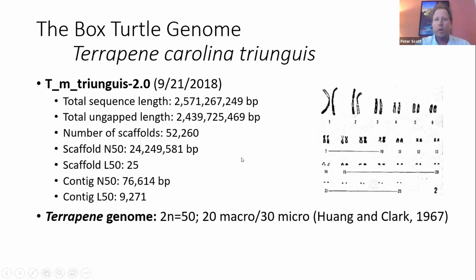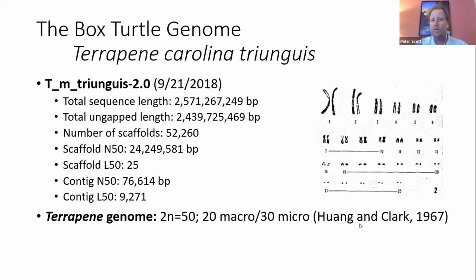The box turtle genome is about 2.6 billion base pairs long. The genome as it stands is assembled into about 50,000 scaffolds. What's really nice when you look at these stats is most of these scaffolds are quite long, which means we have a pretty good idea of the order of genes on the genome. We know it has 50 paired or 25 paired chromosomes — 20 large macro chromosomes and 30 micro chromosomes, which are hard to assemble. So overall, for not being a truly chromosome-level genome, it's in pretty good shape.